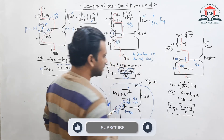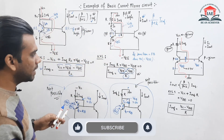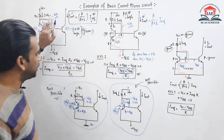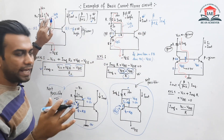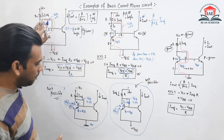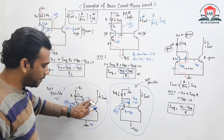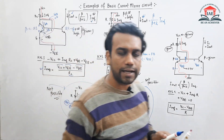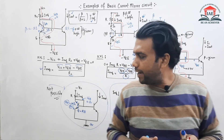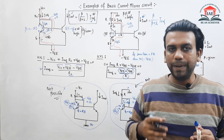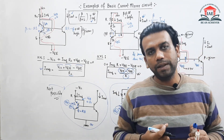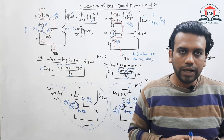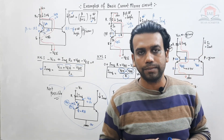So you can see that out of these five circuits, circuit number 1, circuit number 2, and circuit number 3 are acting as current mirror circuits, but circuit 4 and circuit 5 are not acting as current mirror circuits. In this way we can analyze the basic examples of a current mirror circuit. Hopefully you enjoyed the video — thank you for watching.